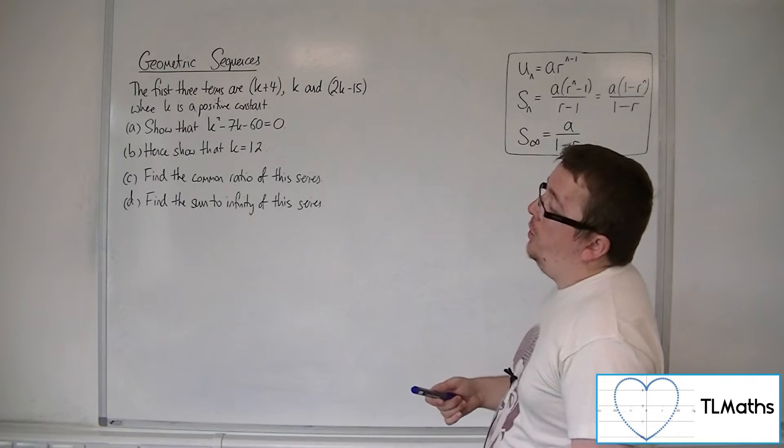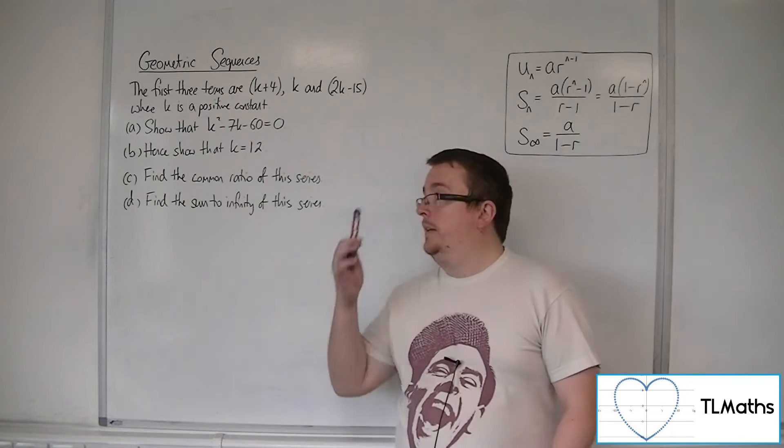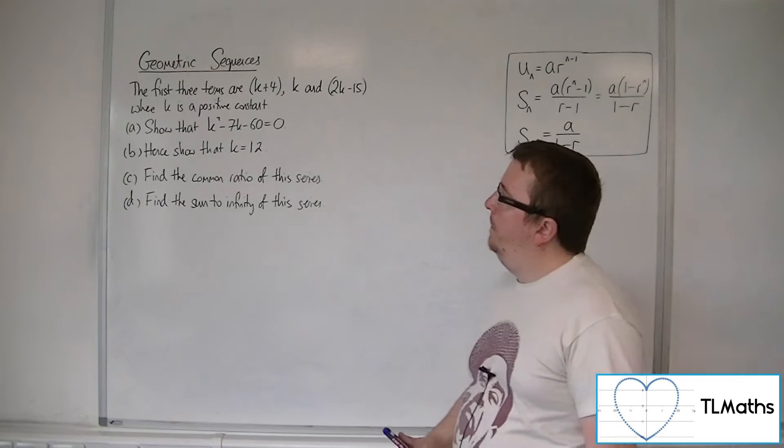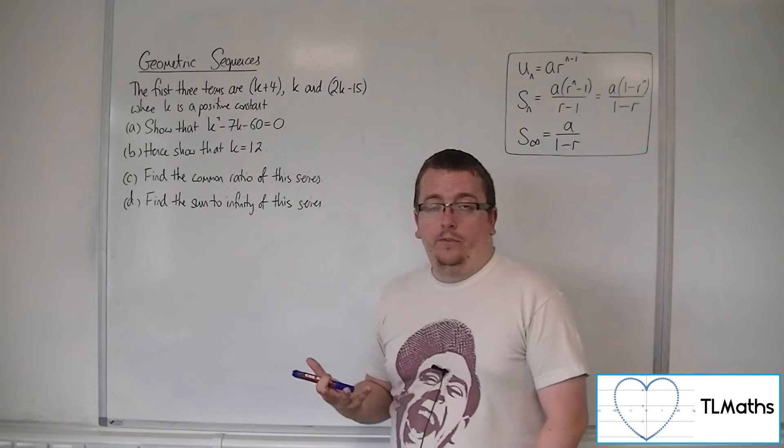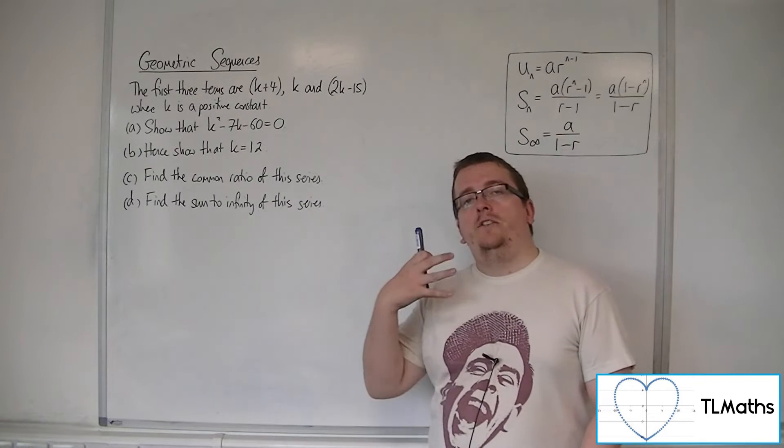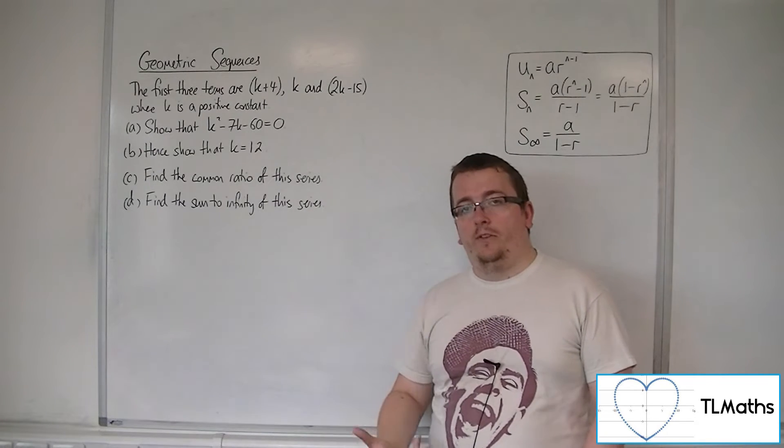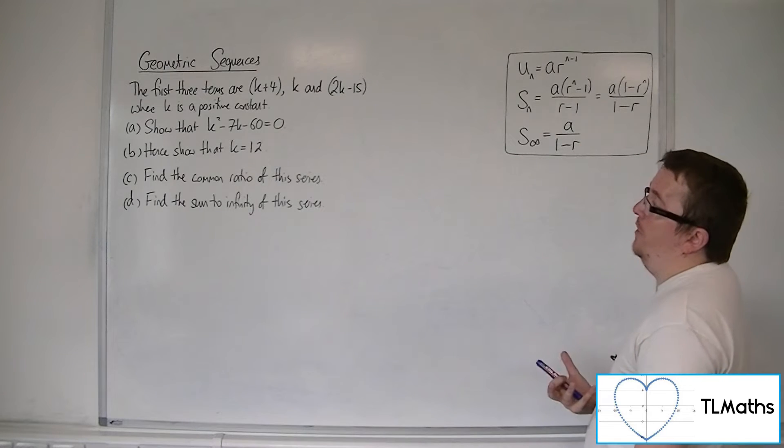First of all, we need to show that k squared minus 7k minus 60 is equal to 0. Now, we must remember that when we've got a geometric series or sequence, then we can find the common ratio by dividing one term by the previous term. That is all the information that we have to go on for this.